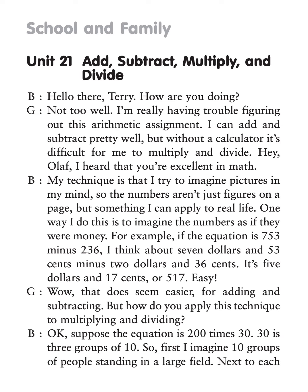Wow, that does seem easier for adding and subtracting, but how do you apply this technique to multiplying and dividing? Suppose the equation is 200 times 30. 30 is three groups of 10. So first, I imagine 10 groups of people standing in a large field. Next to each group is a sign with the number 200 on it. At the front of the field is a huge sign with the number 2,000 on it, because 200 times 10 equals 2,000.